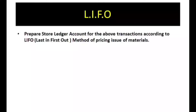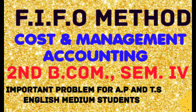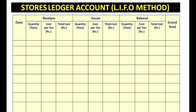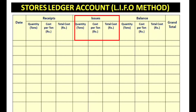Prepare the store ledger account for the above transactions according to the LIFO — Last In First Out — method of pricing issue of materials. The store ledger has columns for date, receipts, issues, and balance. Each of these sections contains quantity, cost per unit, and total cost columns.